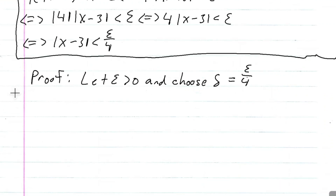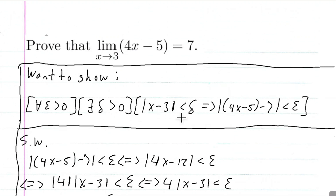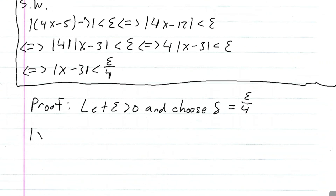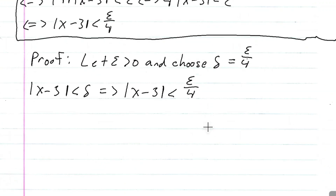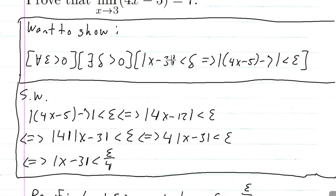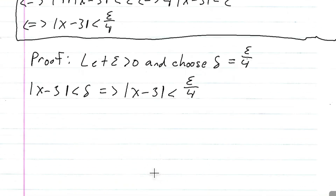Now, for the want-to-show, we start with the assumption that the absolute value of x minus 3 is less than delta. This implies, since we chose delta to be epsilon over 4, that x minus 3 is less than epsilon over 4. And then we do basic arithmetic to get what we want — we want to get from x minus 3 is less than delta to 4x minus 5 minus 7 is less than epsilon. So we multiply both sides by 4: this implies 4 times the absolute value of x minus 3 is less than epsilon.